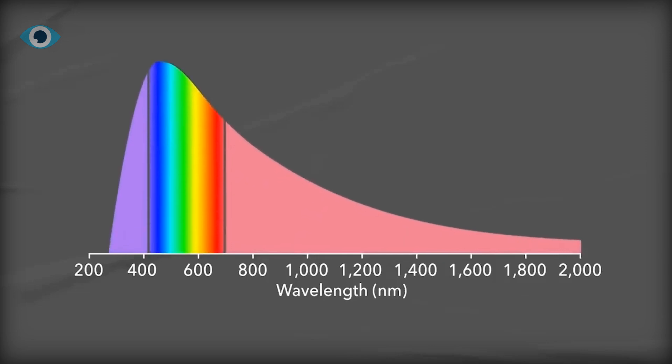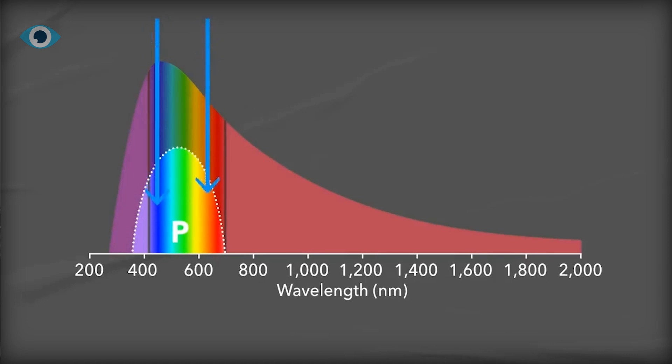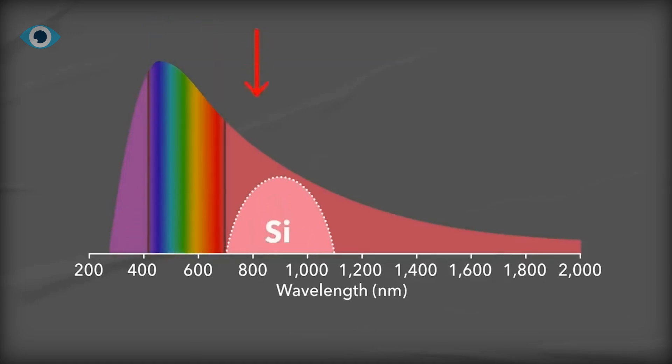Its ability to capture a broader spectrum of sunlight, including both visible and infrared wavelengths, means that perovskite panels can generate more electricity from the same amount of sunlight compared to conventional panels.